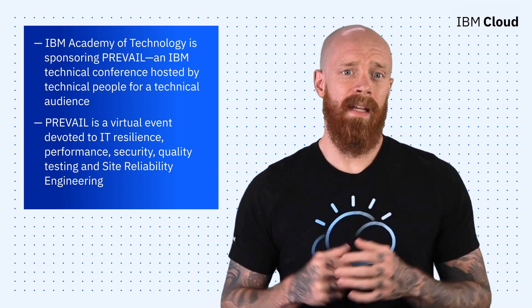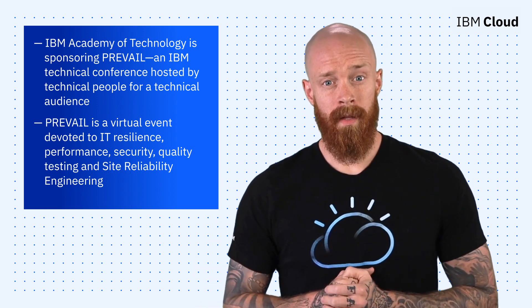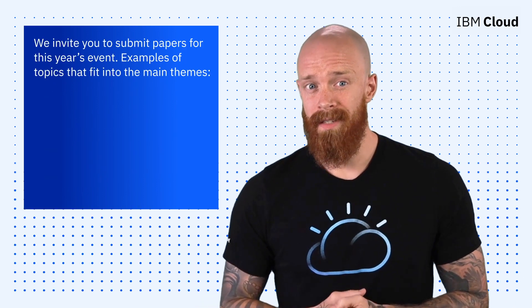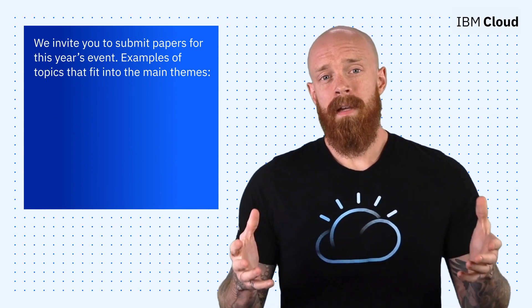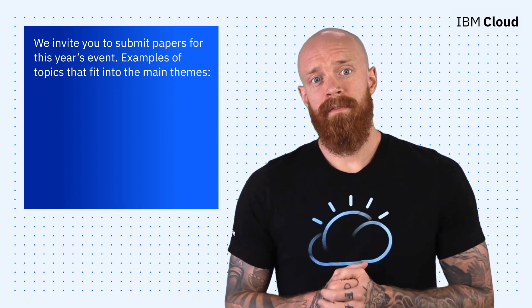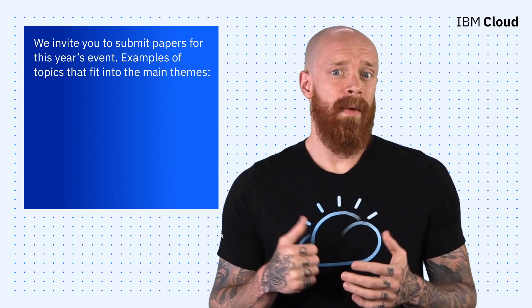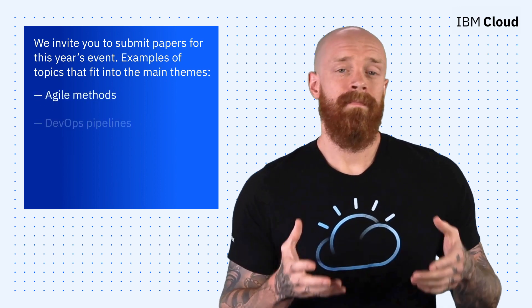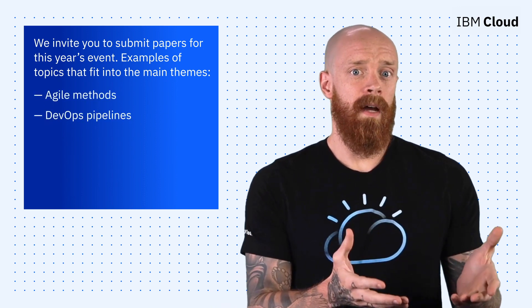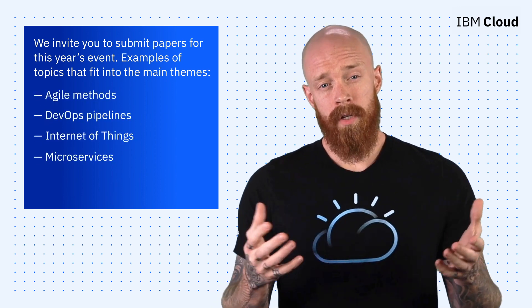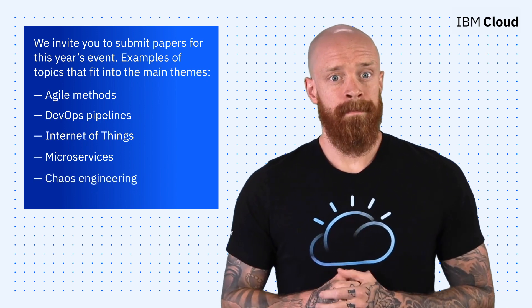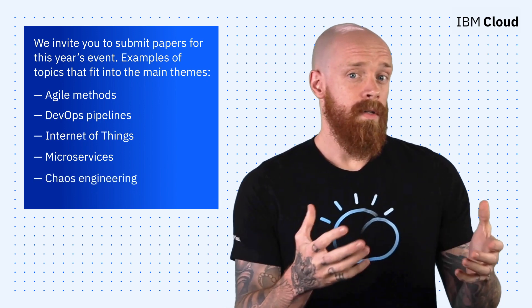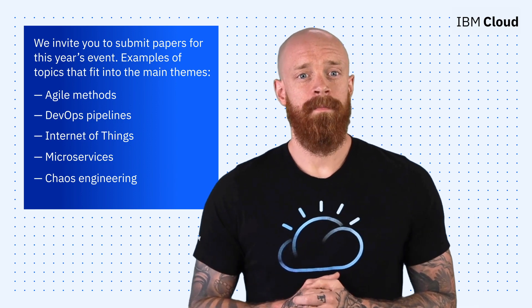We've got some great keynote speakers lined up, but we'd also like to invite you to submit papers for this year's event. Some examples of topics that would fit into the themes I mentioned are agile methods, DevOps pipelines, Internet of Things, microservices, or chaos engineering. To register for the IBM Prevail conference or submit a paper, check out the link below.